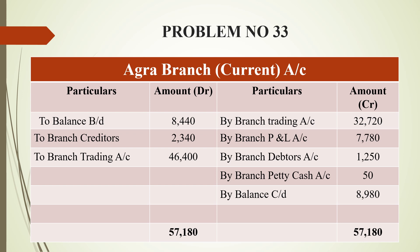In the branch current account, whatever is inside the business is shown on the debit side, and whatever goes outside is shown on the credit side. By branch trading account — looking at the trading account's debit side total for all expenses — you will get 32,720 rupees.